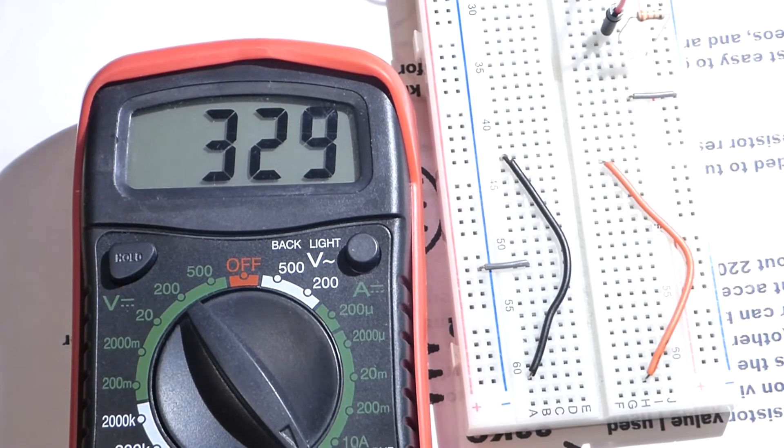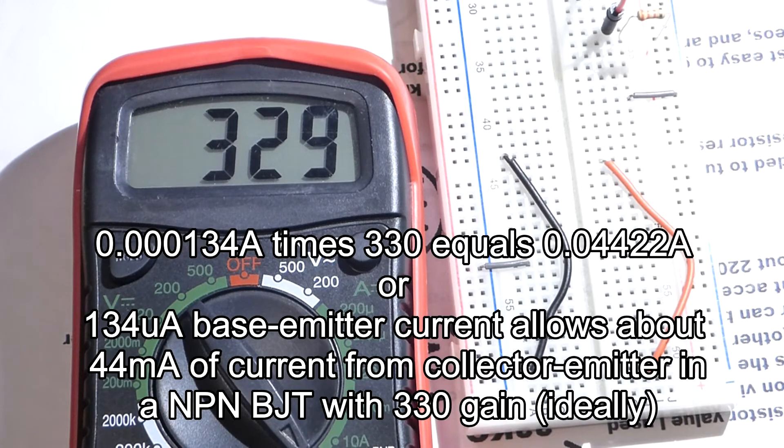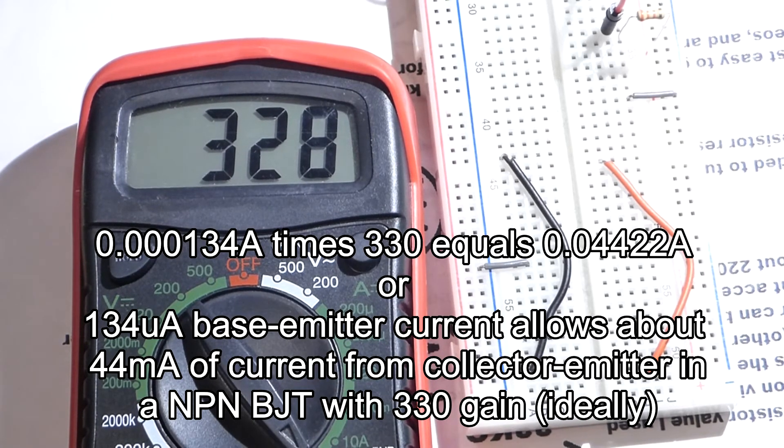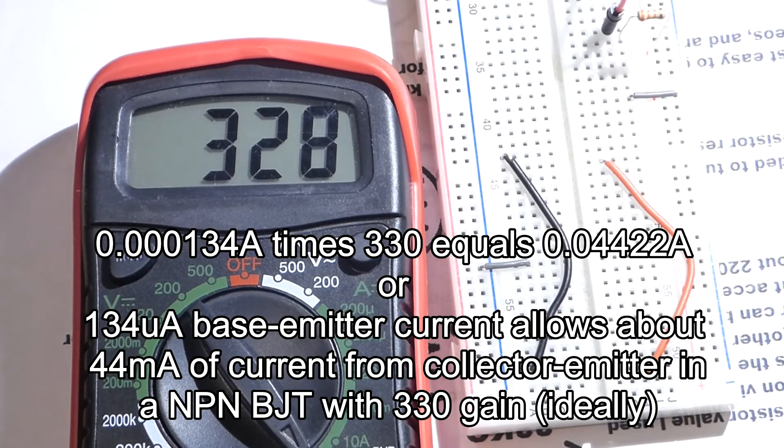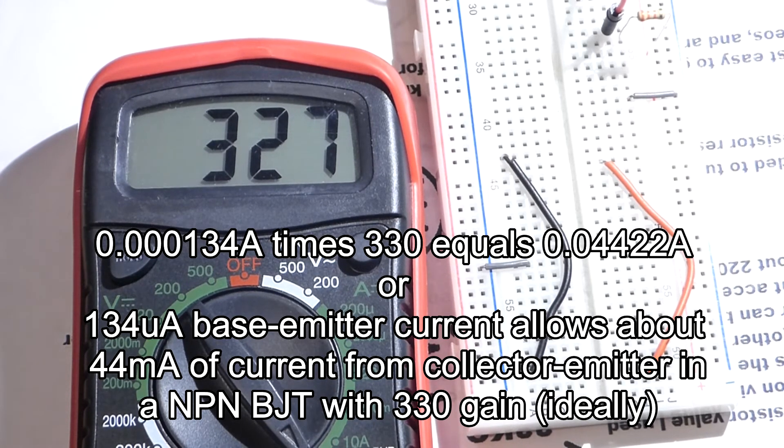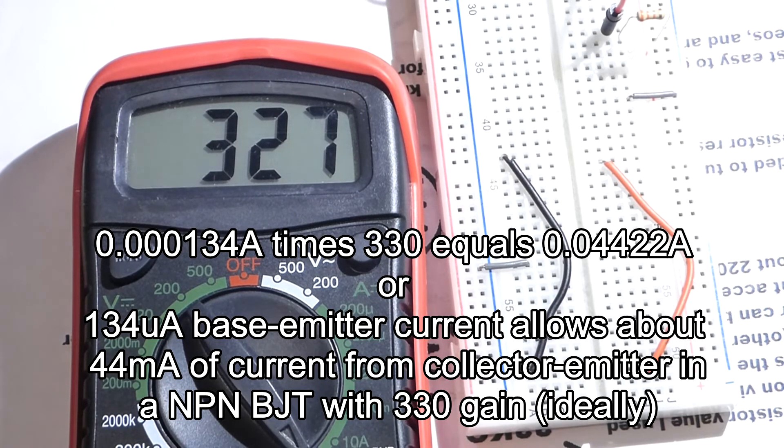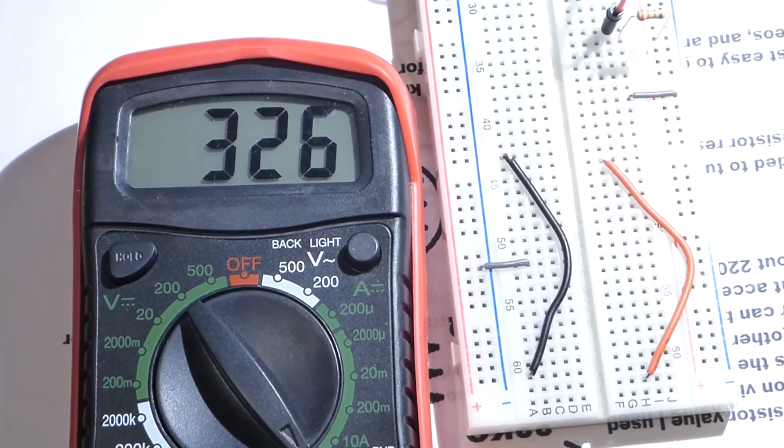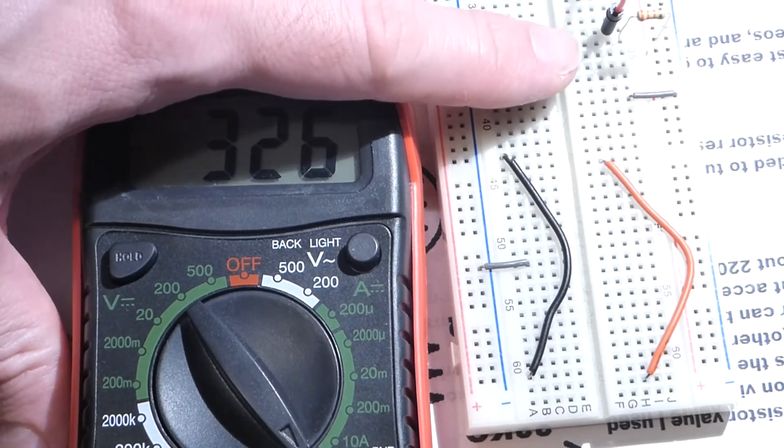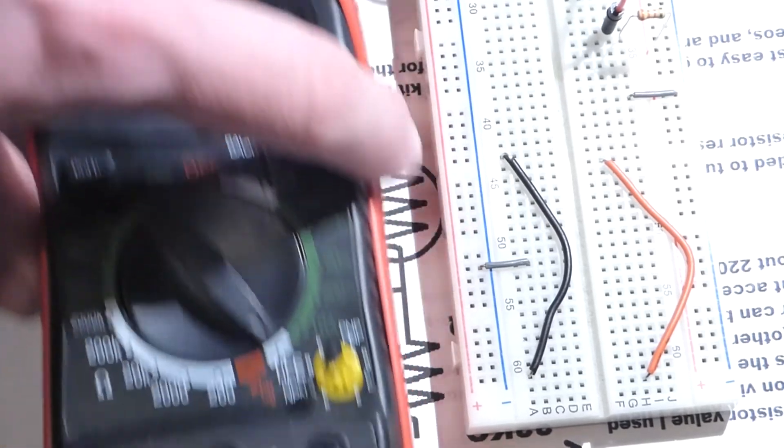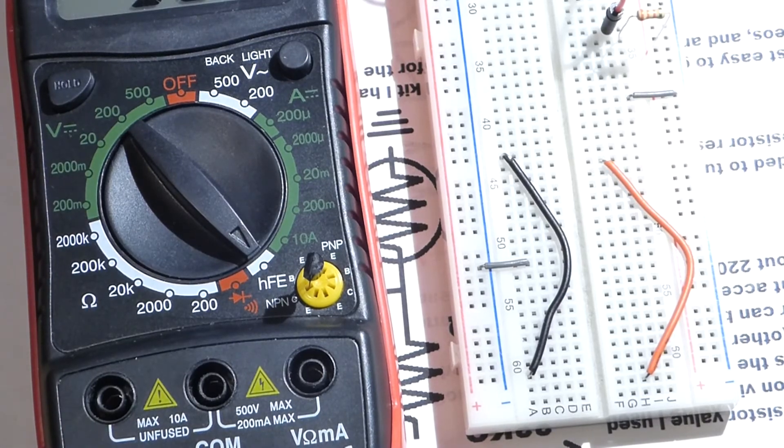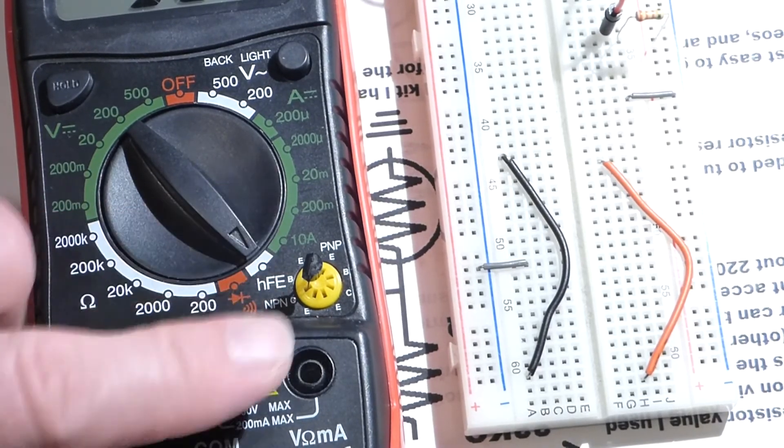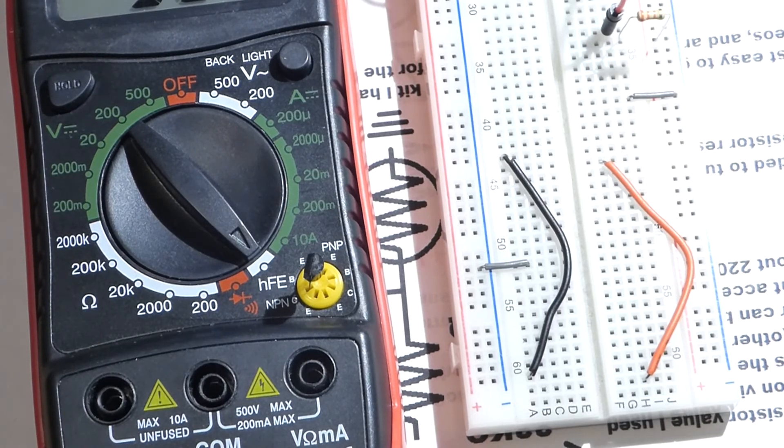With the 0.134 microamps, if we multiply that by 330, then we would have about 44.2 milliamps. As you can see, with 0.134 microamps of current to the base of the transistor, we got really close to 44 milliamps of current running from collector to emitter.